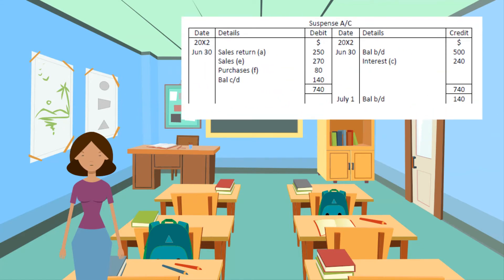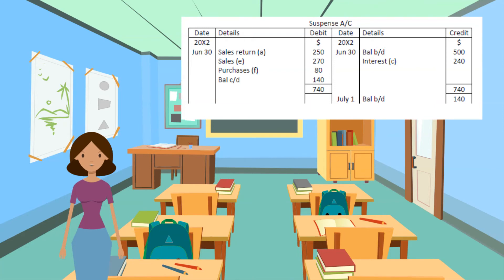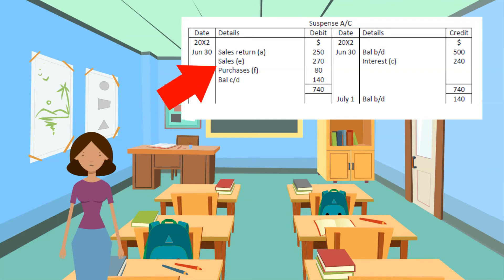So let's do an example. The totals of a company's trial balance on June 30, 2020 did not agree — there was a shortage of $500 on the credit side. This was entered in a suspense account. The following errors were later discovered. A: Goods of $250 returned by the customer were omitted from the sales returns account. B: Payment of $1000 for wages was erroneously recorded to the stationery account. C: Interest of $120 received from the bank was debited to the interest account. D: Purchase of a printer for $500 was debited to the general expense account. E: A sale of $690 was recorded in the sales account as $960. F: Purchases of goods amounting to $80 were not recorded.